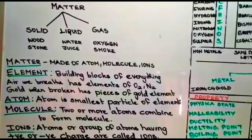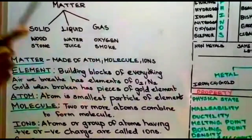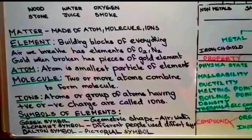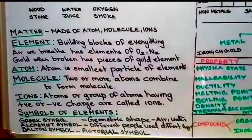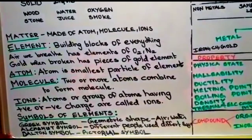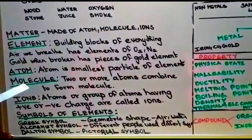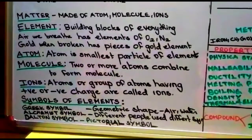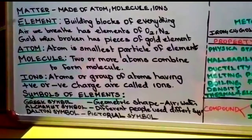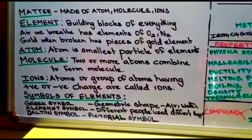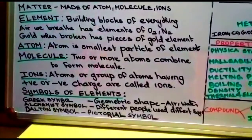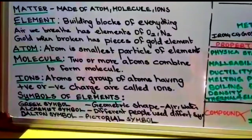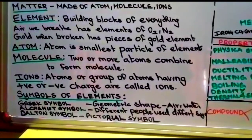Matter is made up of atom, molecule, or ions. First we should know what is an element, because the atom is the smallest particle of the element. Element is the building block of everything. For example, the air we breathe has elements like oxygen, nitrogen, and argon. When gold is broken down into very small pieces, each tiny piece still has gold elements in it.